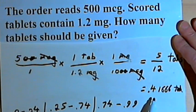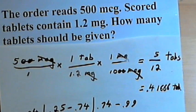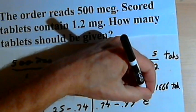Well, the number we have, 0.41666, is between 0.25 and 0.74, so that means we're going to give one half pill, one half tablet.